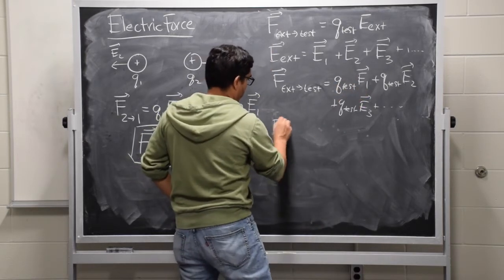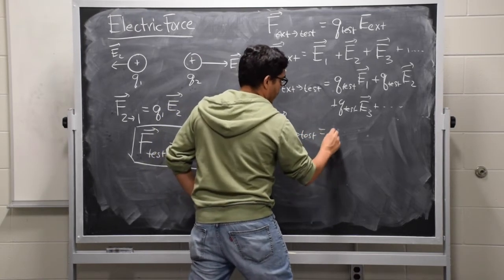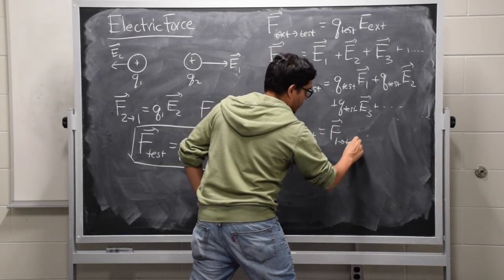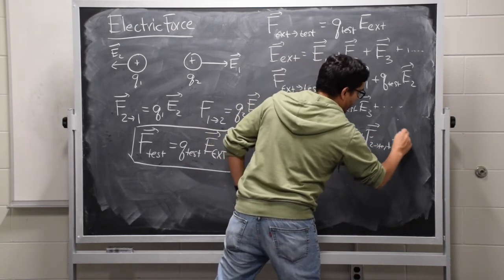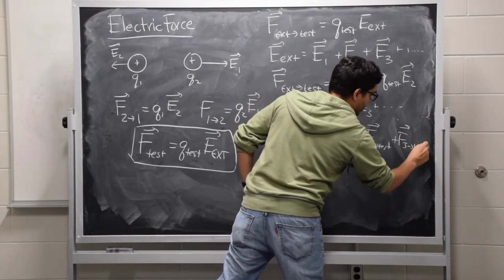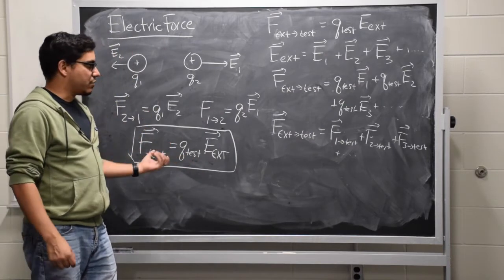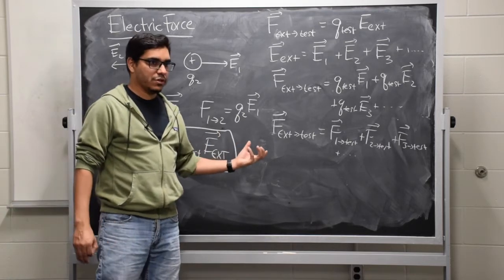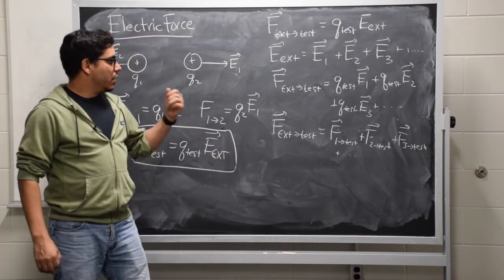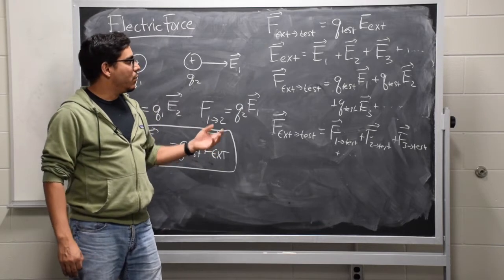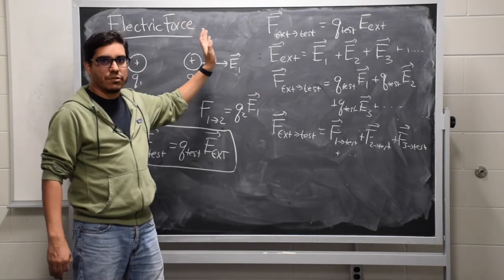The total force that external charges apply to the test charge is therefore the force of charge 1 on the test charge, plus the force of charge 2 on the test charge, plus the force of charge 3 on the test charge, and so on. They all have the same form. So this idea of superposition of the electric field can be thought of in terms of superposition of forces, which you already have experience with — pushes and pulls adding up together. This deep connection allows us to add up electric fields without worrying about whether there are test charges around.